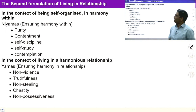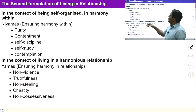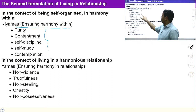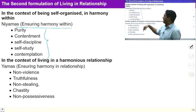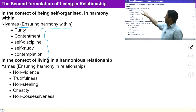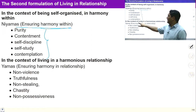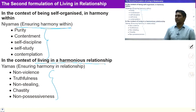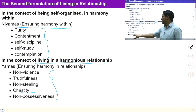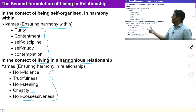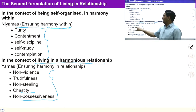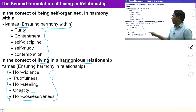Niyam means ensuring harmony within myself, covering five points: purity, contentment, self-discipline, self-study, and contemplation. These are related to ensuring harmony within myself. In the context of living in harmonious relationship, the Yam principles — non-violence, truthfulness, non-stealing, chastity, and non-possessiveness — will help us. With understanding of Niyam we ensure harmony within ourselves, and with understanding of Yam we ensure harmony in relationship.